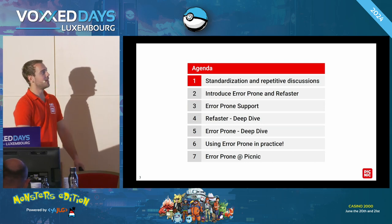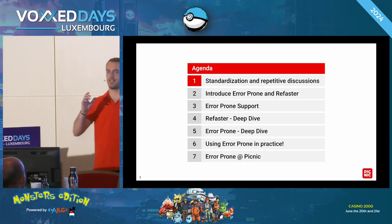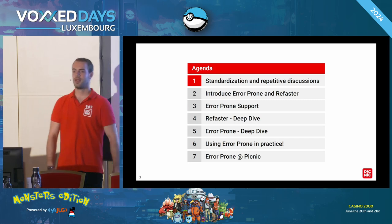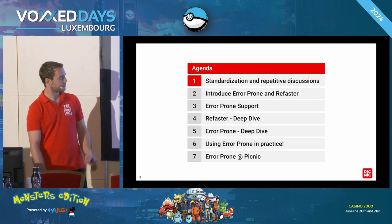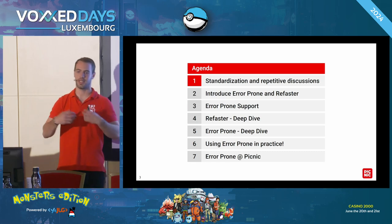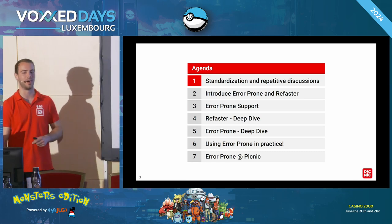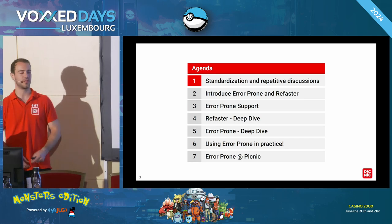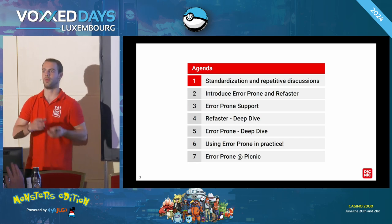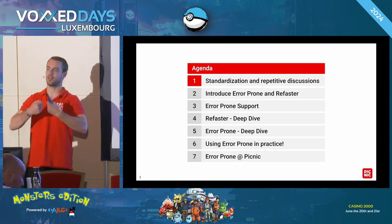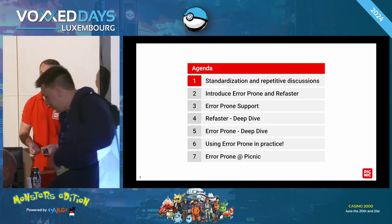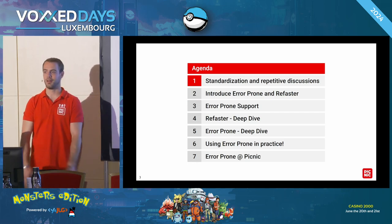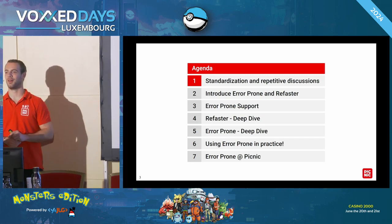Let's go over the agenda of today. First, I'm going to give you a bit more context about some of the processes or guidelines that we have around standardizations and how to get rid of repetitive discussions. Then I'm going to introduce you to Error Prone and Refaster, and then about an open source project that we have as an online supermarket called Picnic. Then we're going into the big part — the deep dive into both Refaster and Error Prone — and I will also show you how to start introducing these things in your company.